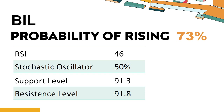The probability of BIL share price rising is 73%. When the probability of rising is higher than 50%, it means that the stock has a higher chance of rising. If the probability of rising is lower than 50%, it means that the probability of falling is high. Combining multiple technical analysis indicators, BIL has two bullish signals and six bearish signals.